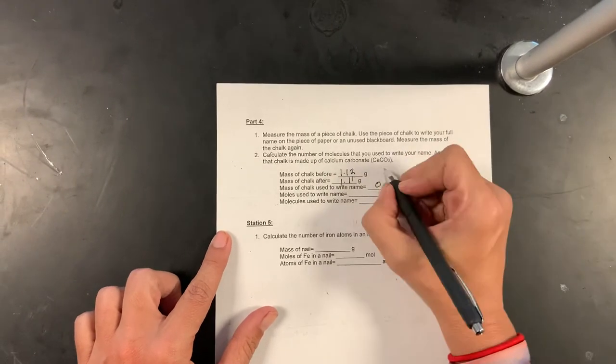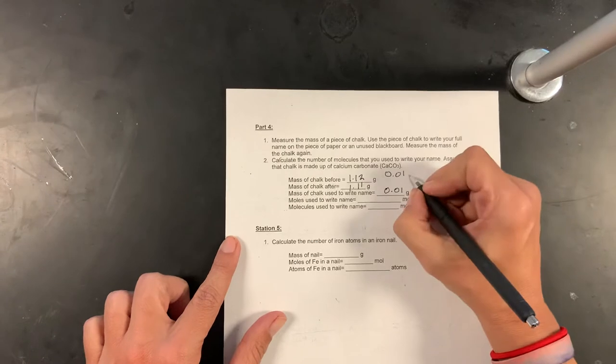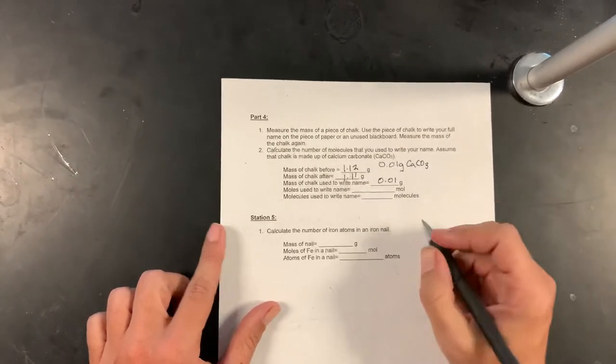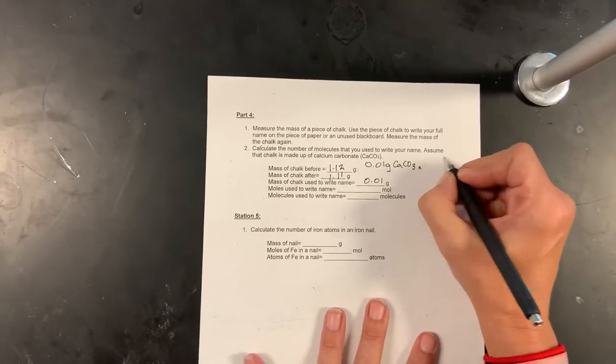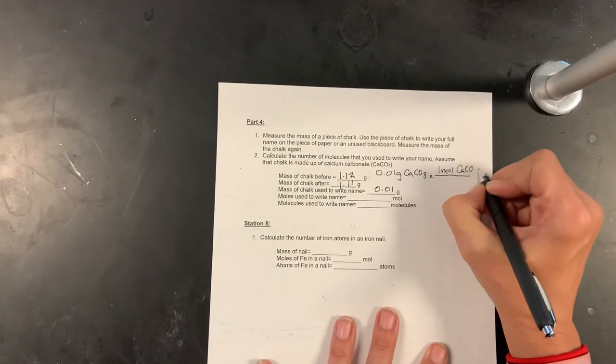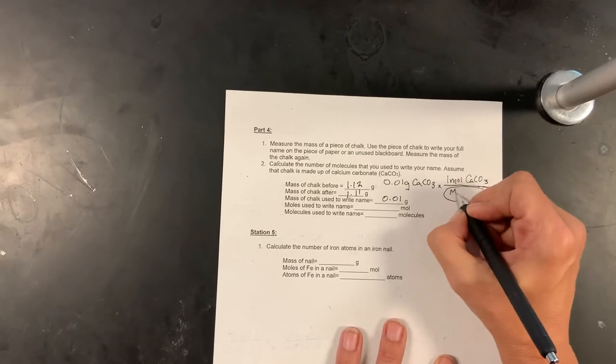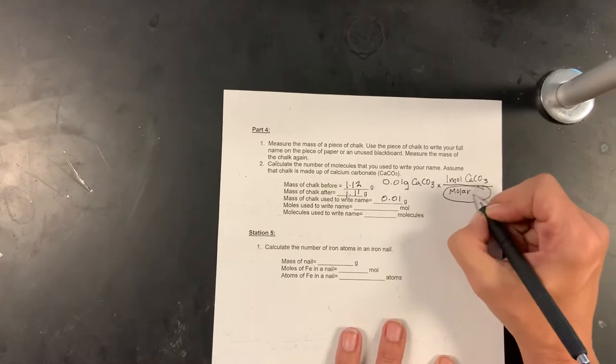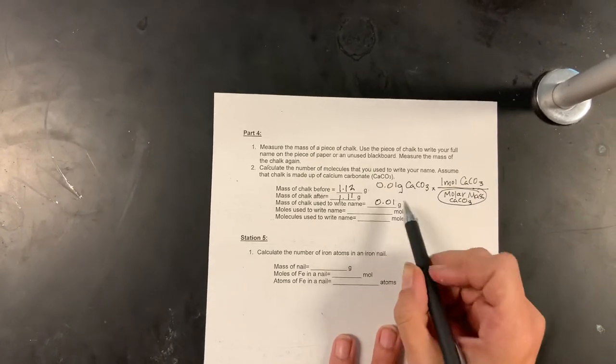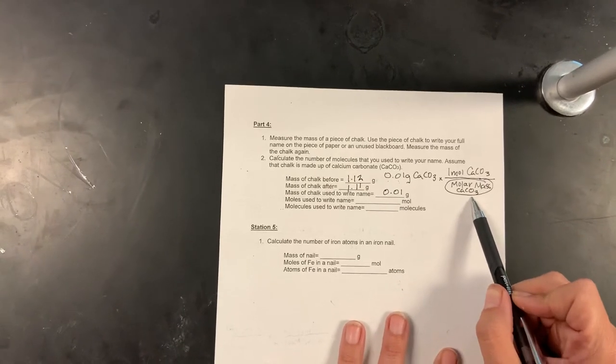So now let's figure out how many moles. To do that, you're going to take this 0.01 grams of calcium carbonate, CaCO3, and we're going to go ahead and say one mole of calcium carbonate is equal to the molar mass. So you're going to get the molar mass of calcium carbonate right there.